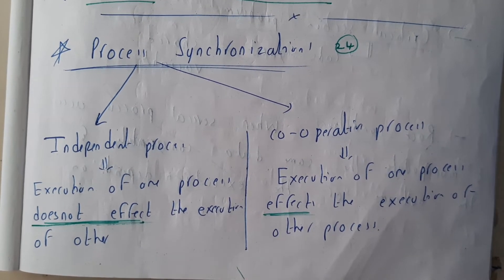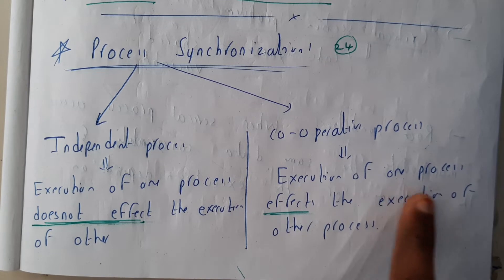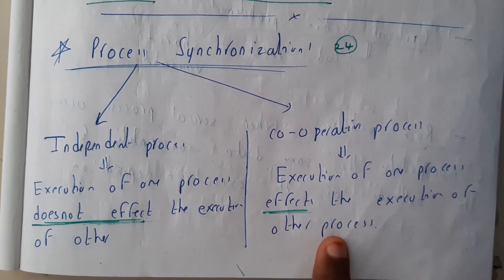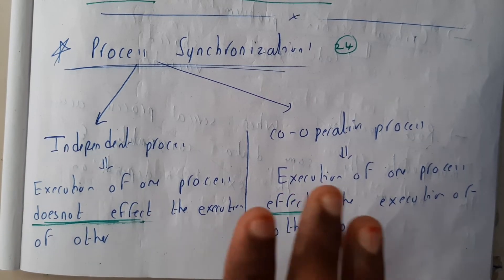Where cooperative processes - execution from one process affects the execution of another process. So here there will be a chance of affecting, where here there will be no chance. So this is cooperative processes, these are independent processes.